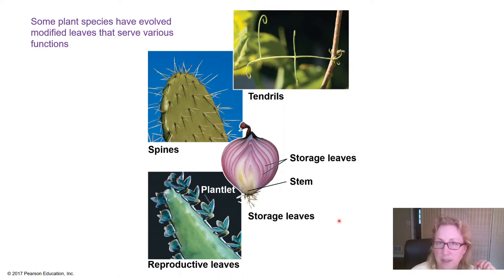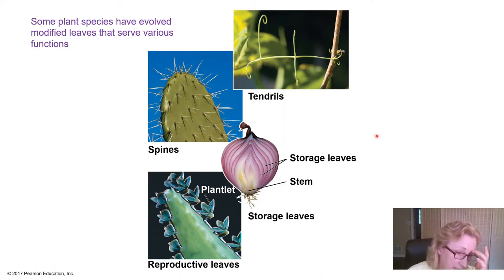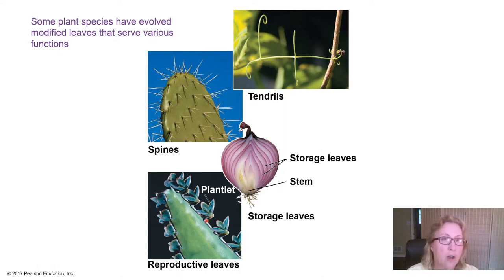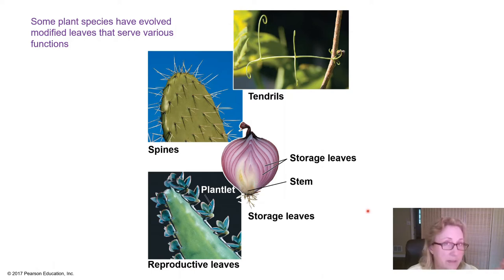Leaves can also evolve to be specialized. The little tendrils on a pea plant that help them attach to a trellis are modified leaves. Spines on cactuses are mostly modified leaves. Some succulents have leaves that can break off and root to form a completely new plant. The onion is actually a modified stem with leaves — the stem is at the very bottom where the roots are, and all the layers of the onion are modified leaves.